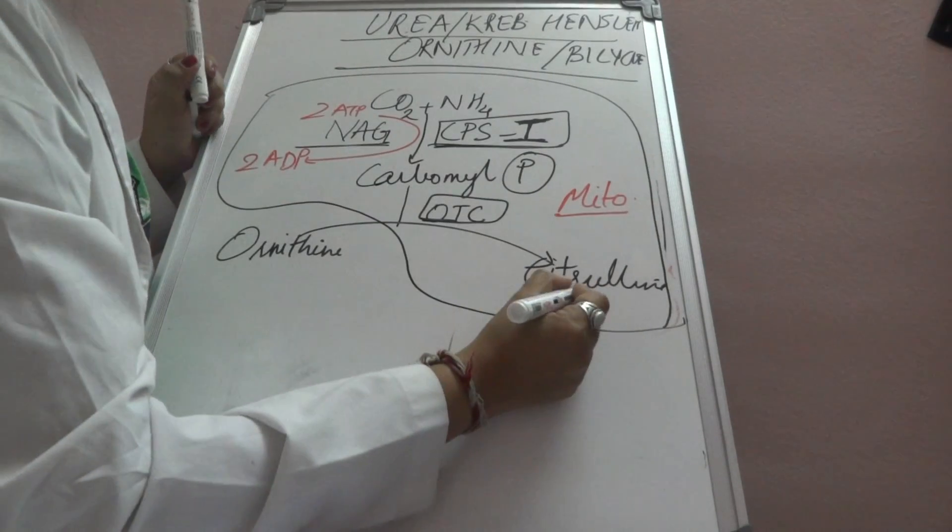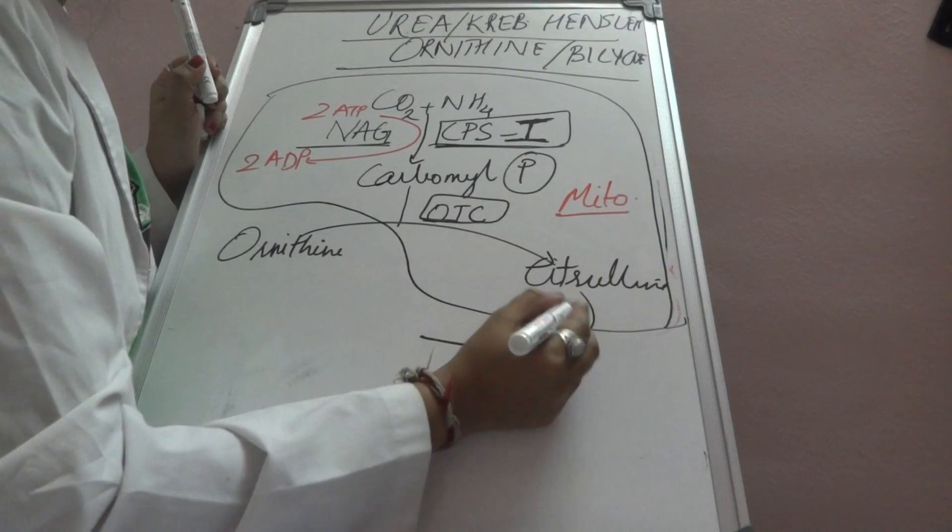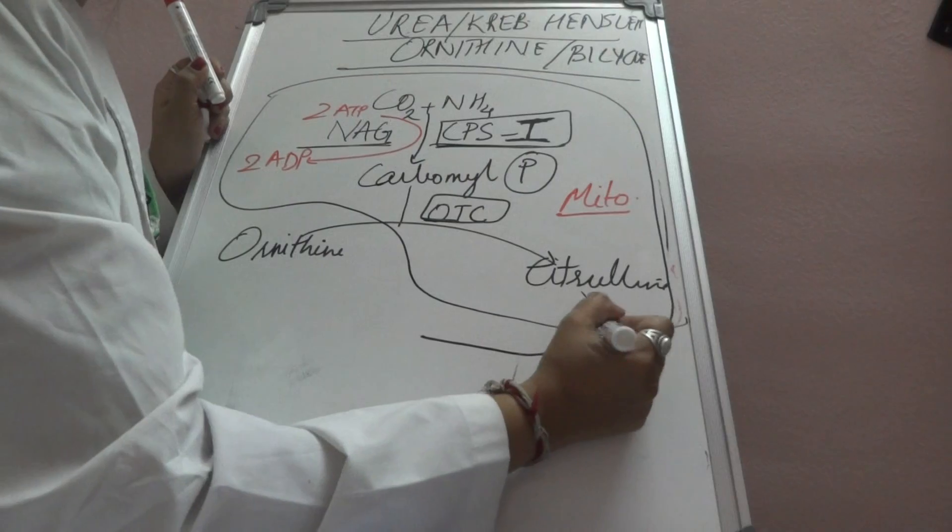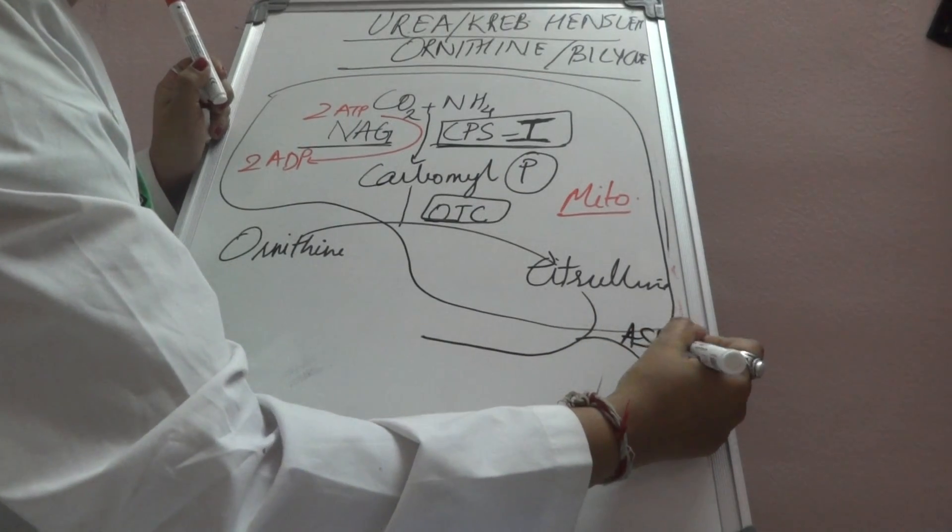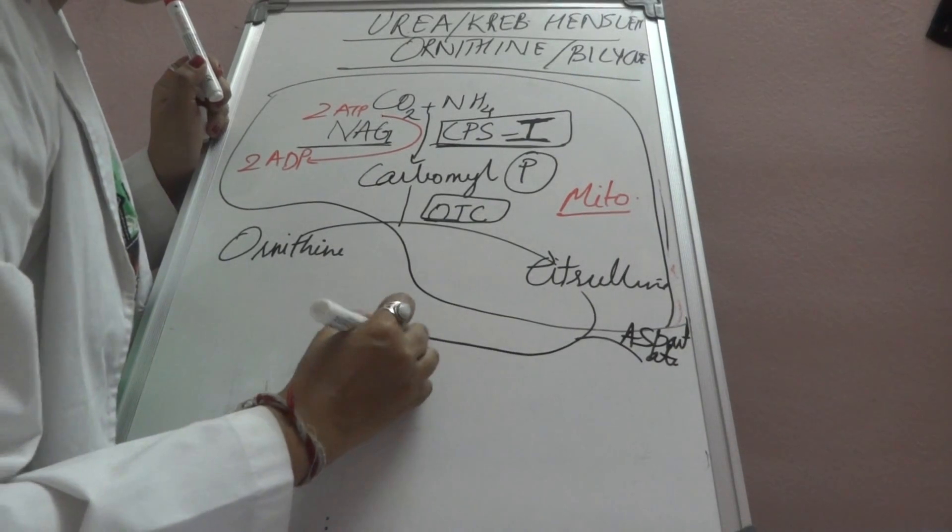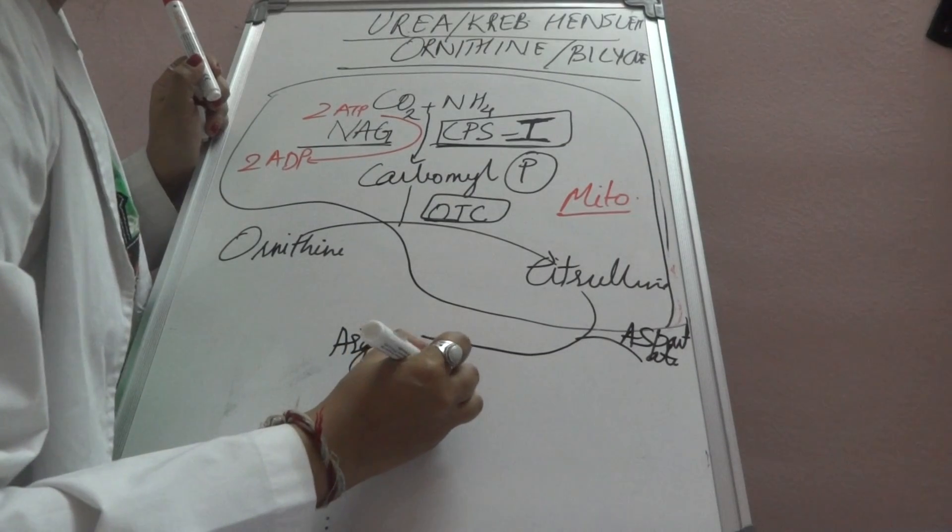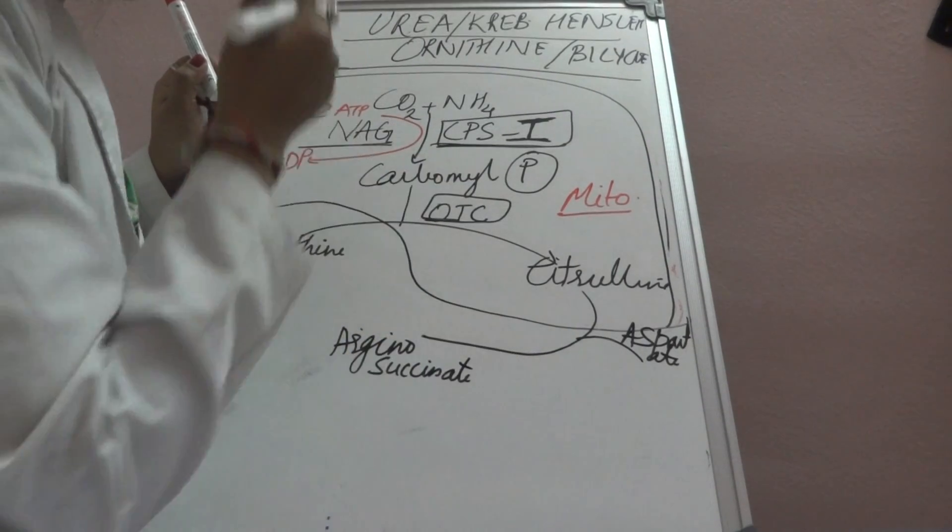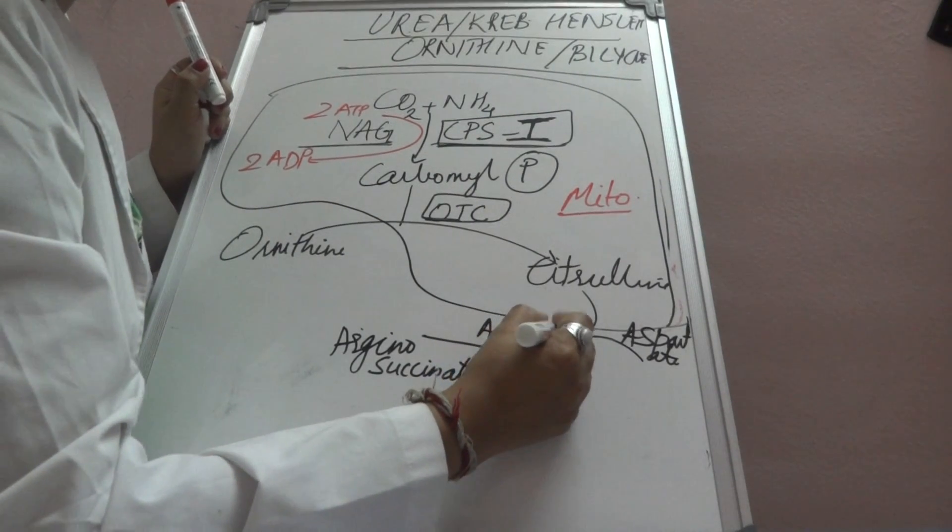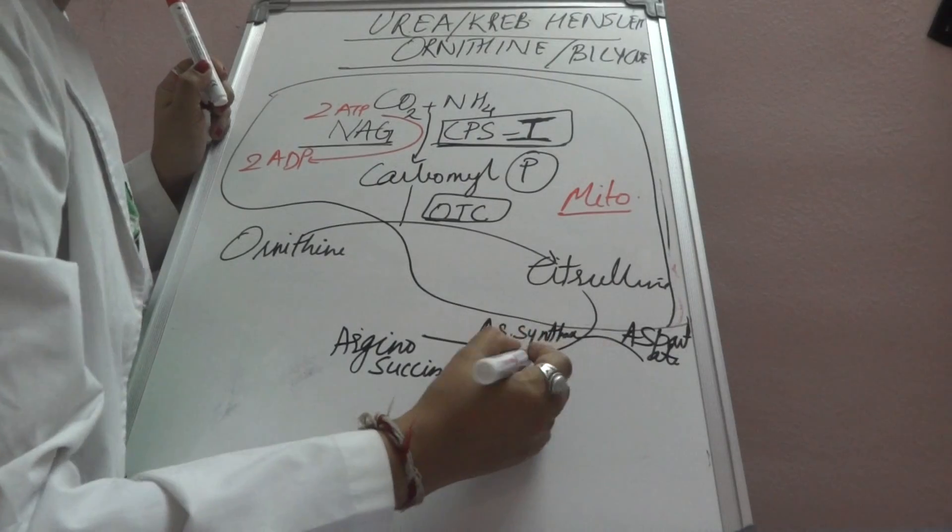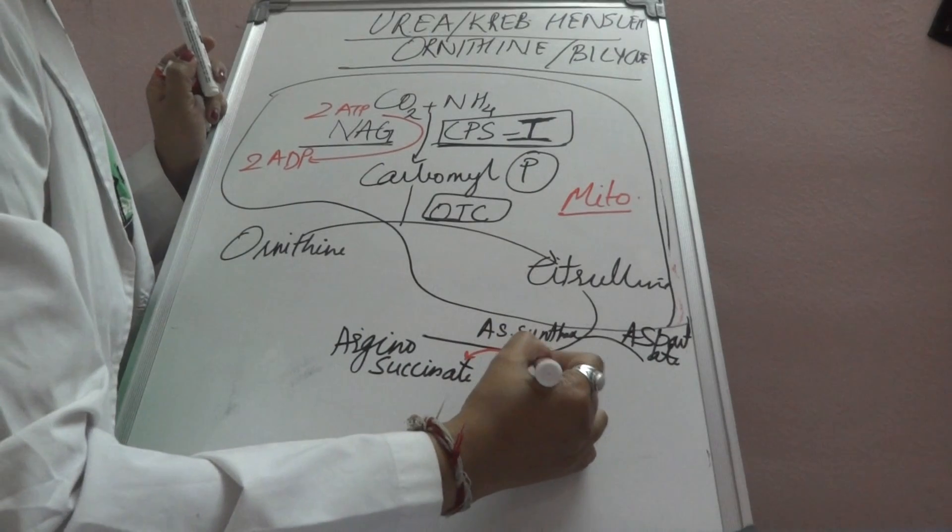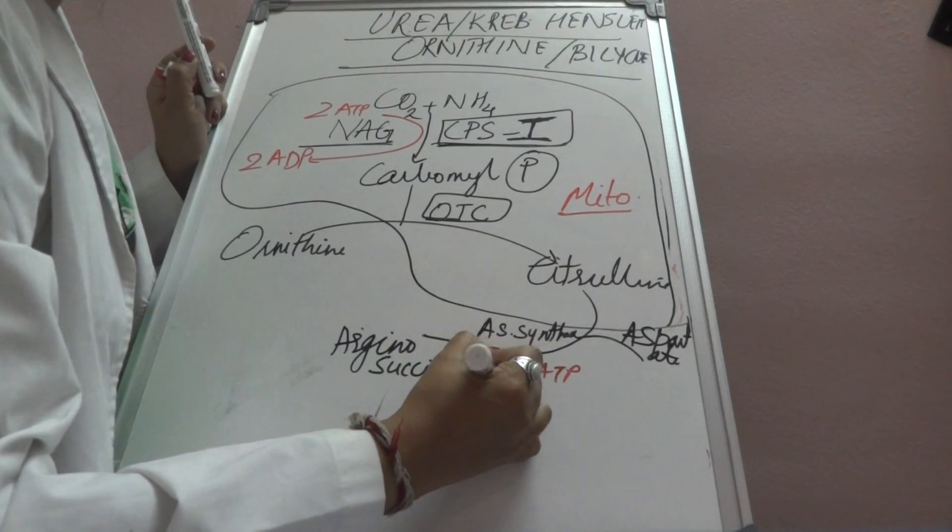Now citrulline will come out into the cytoplasm through a transporter and react with aspartate to form argininosuccinate. This occurs in the presence of argininosuccinate synthase. This step consumes one ATP, but here AMP is formed.